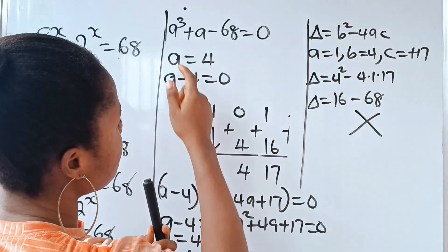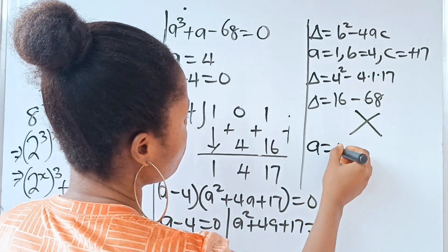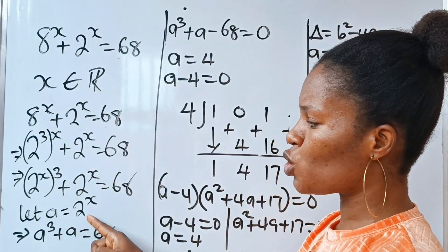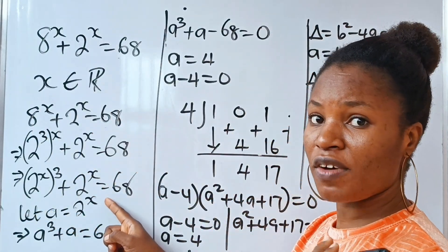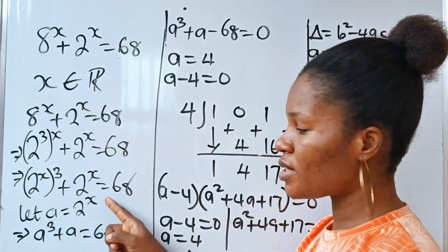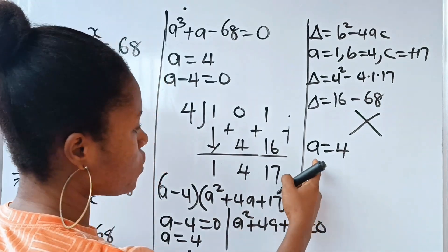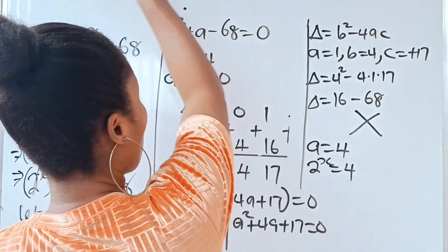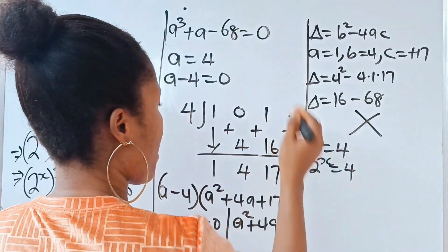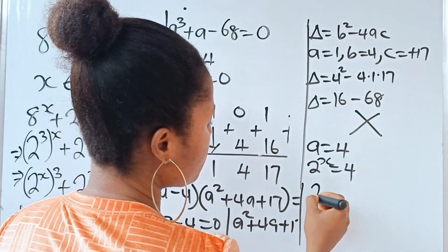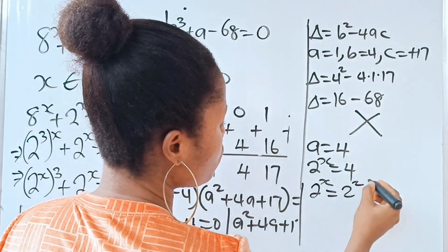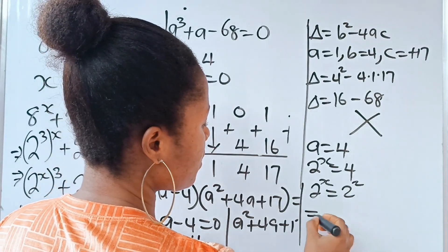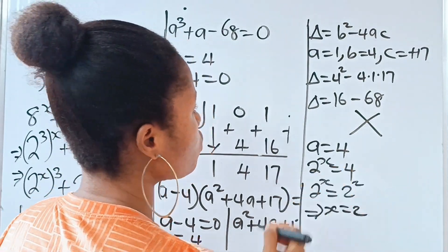Recall that a equals 2 to the power of x. We are looking for x, not a. So substituting back: 2 to the power of x equals 4. That means 2 to the power of x equals 2 to the power of 2. By comparison, this implies x equals 2.